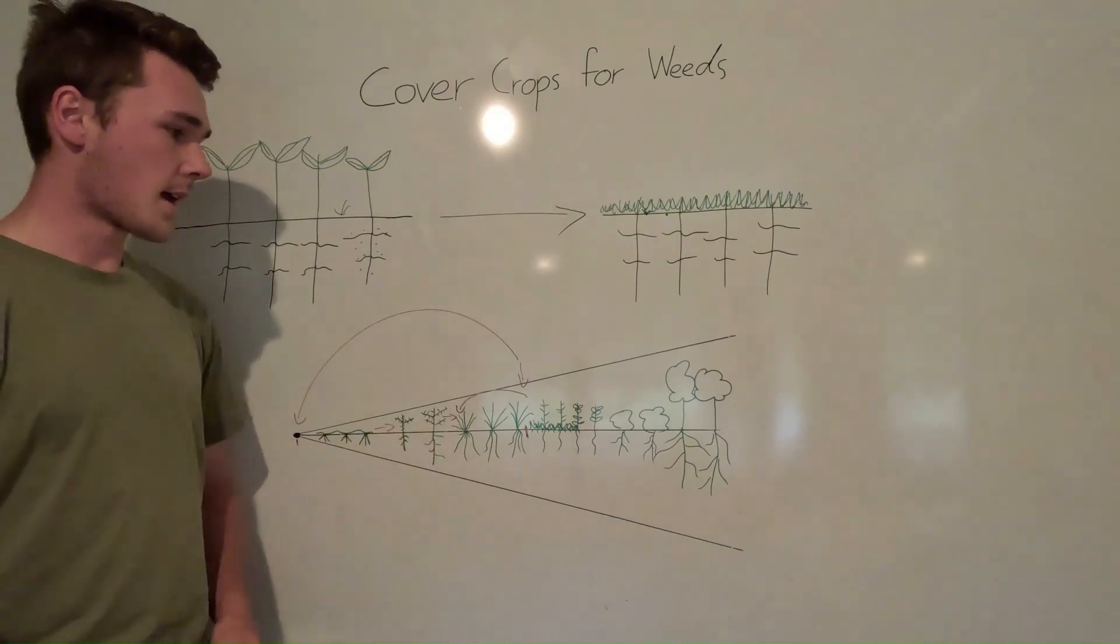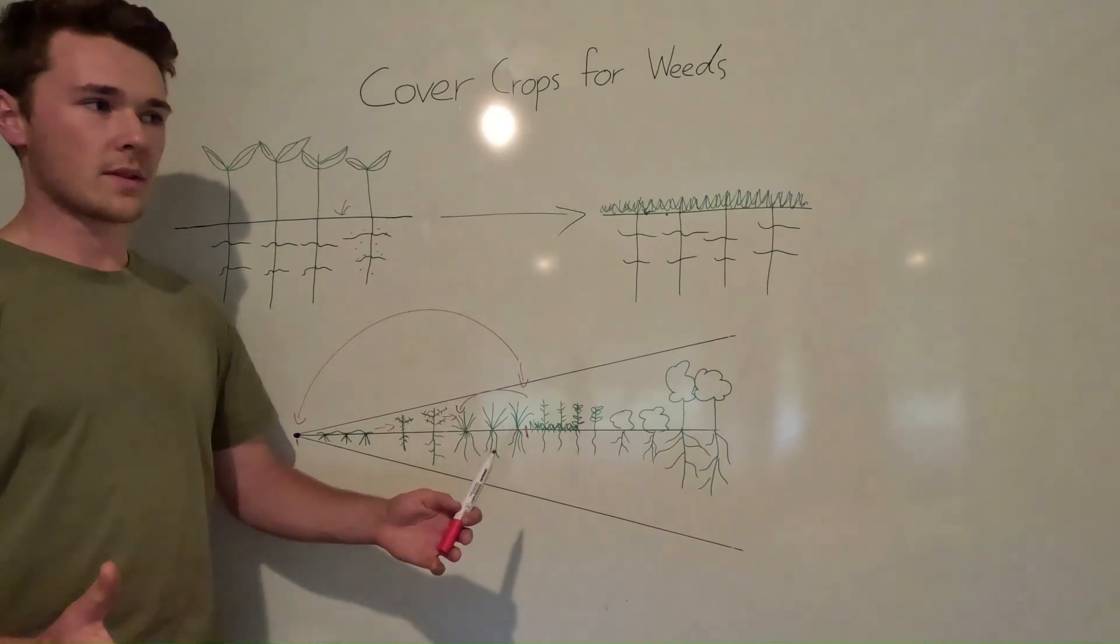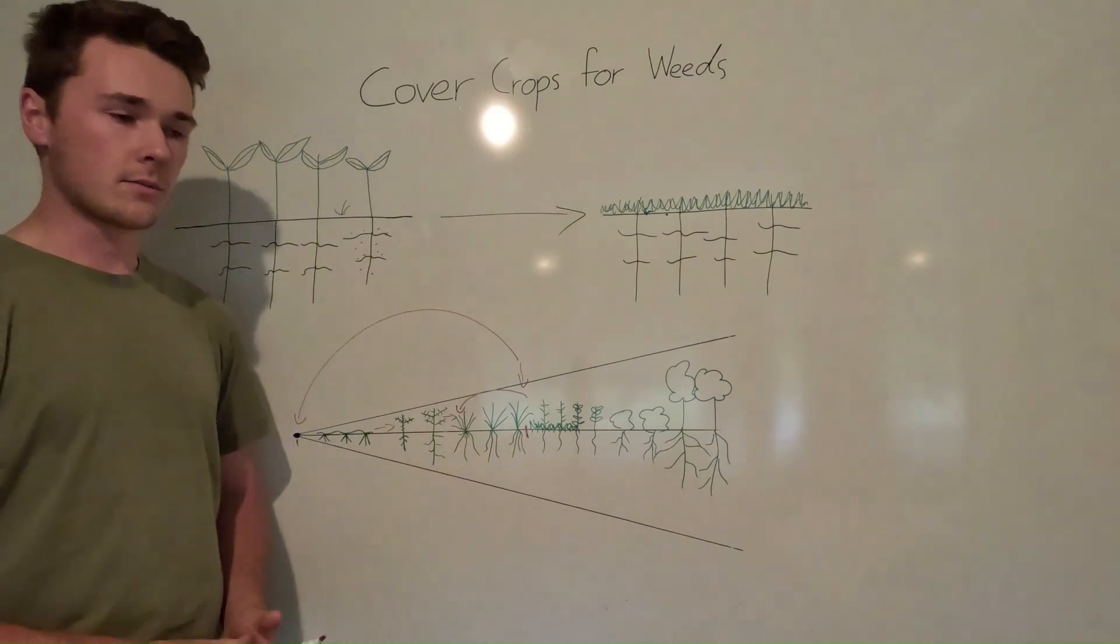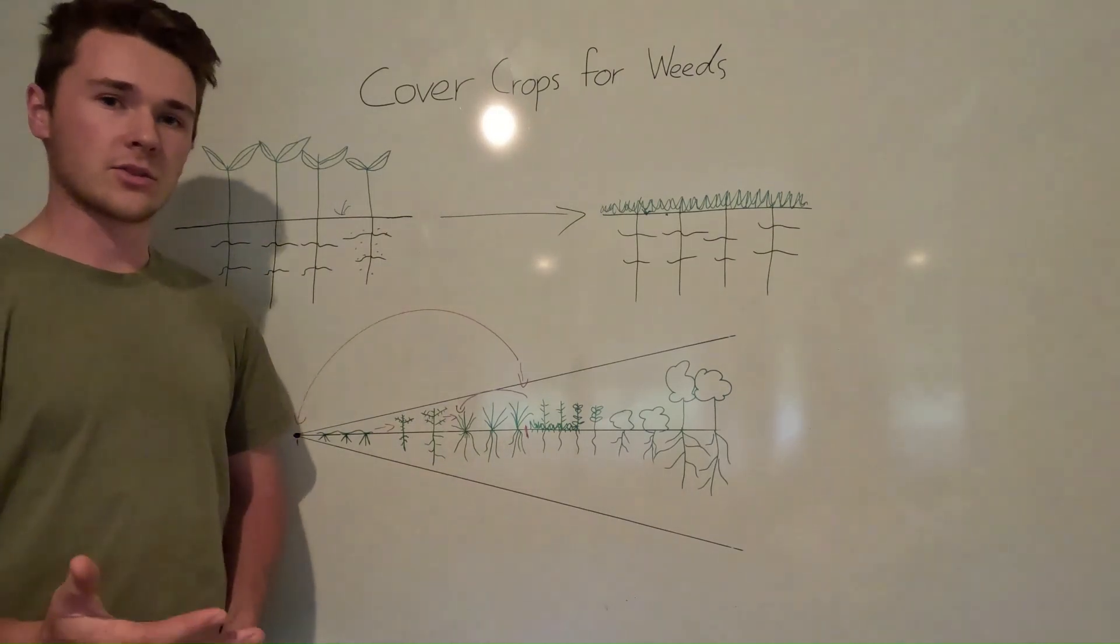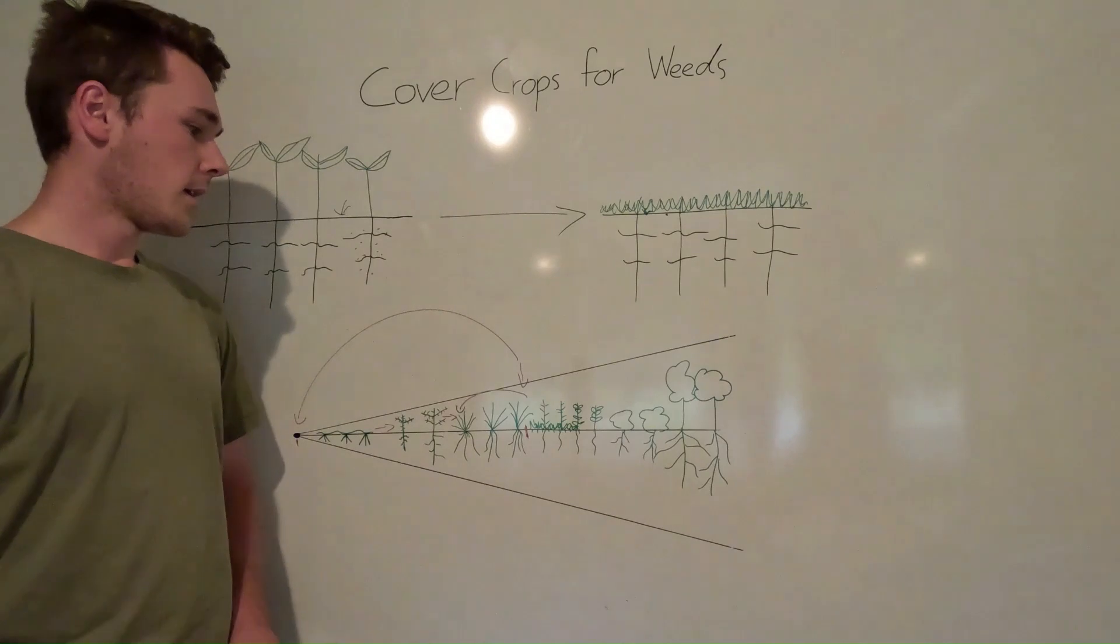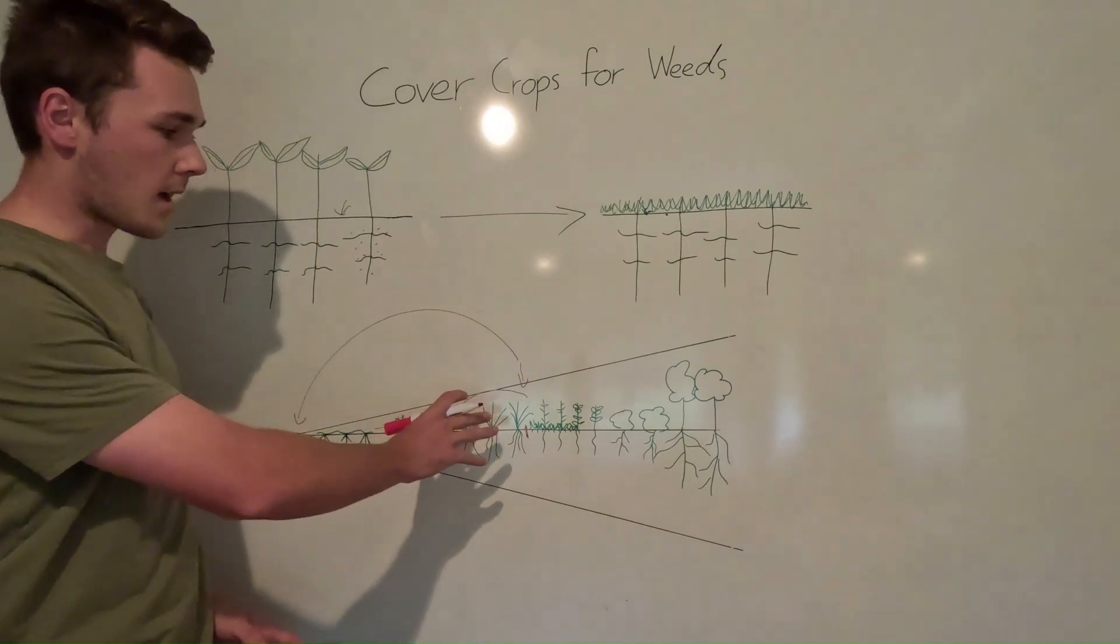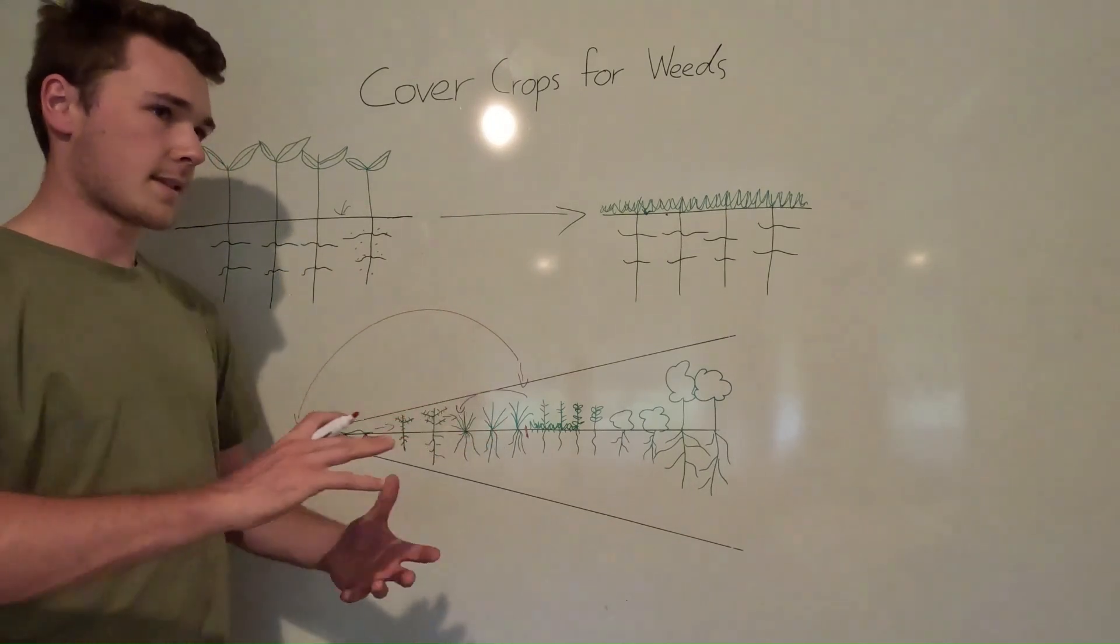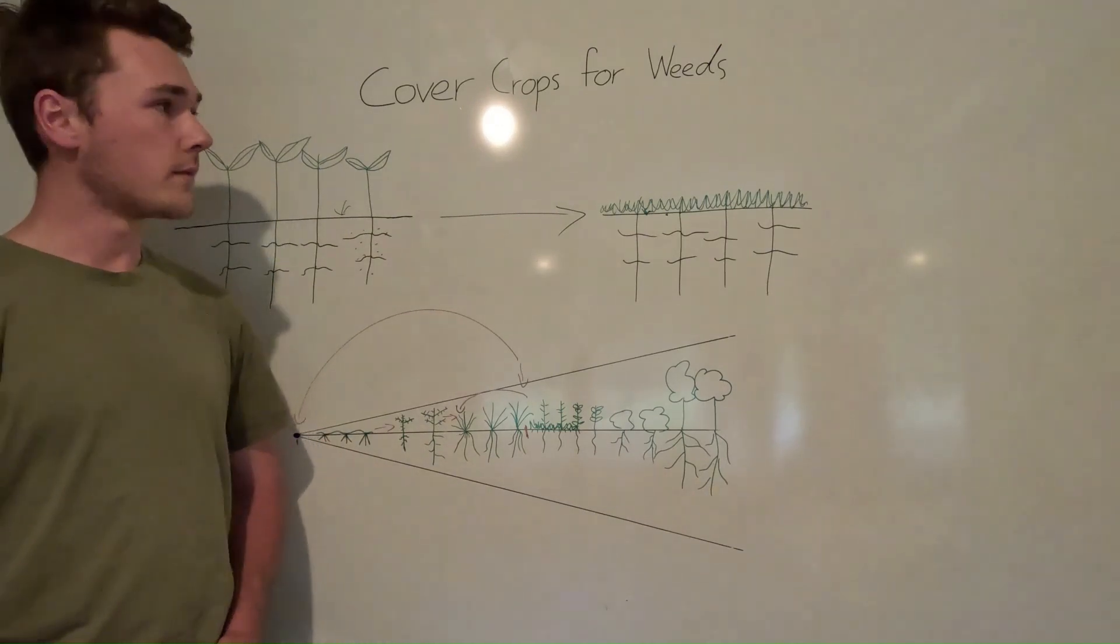Now, some weeds that are almost like the nitrogen regulators, which pick up excess nitrogen like lamb's quarter, they can still come up through this because that's their particular ecological function that they need to serve.